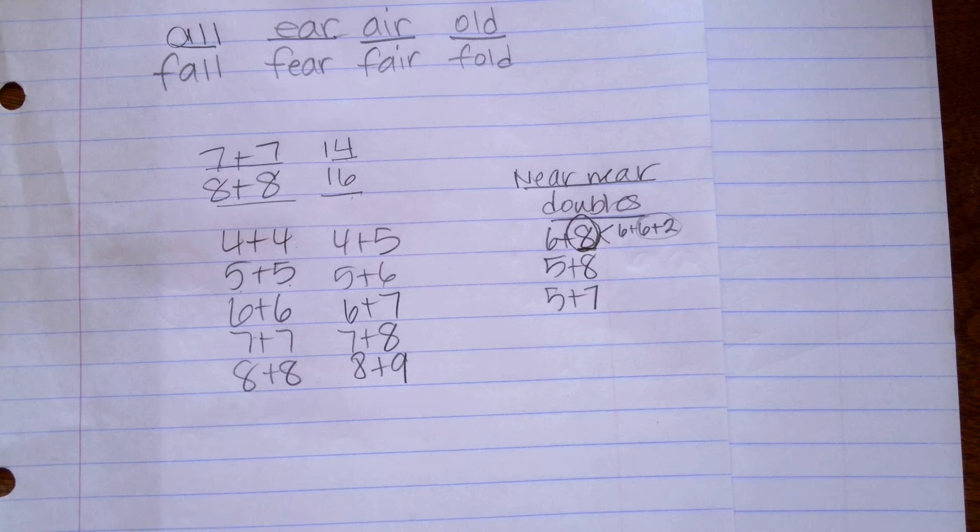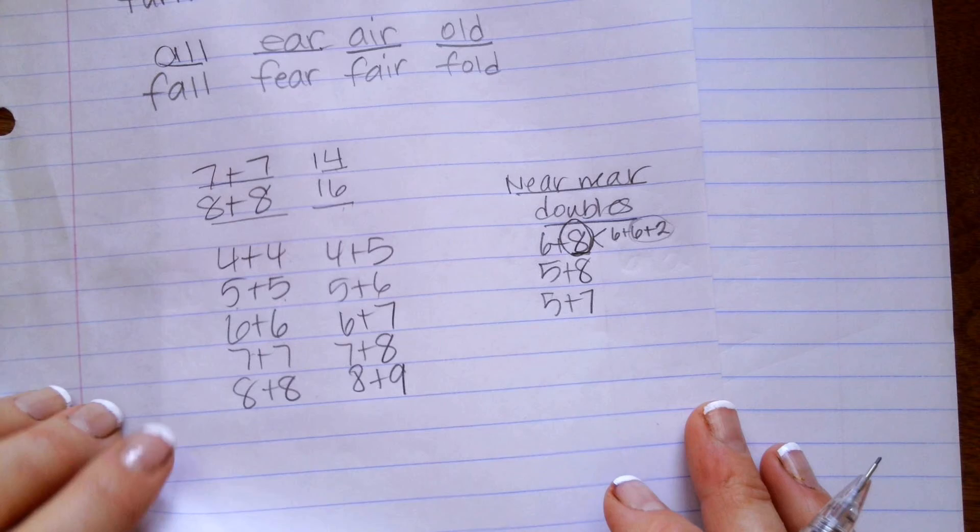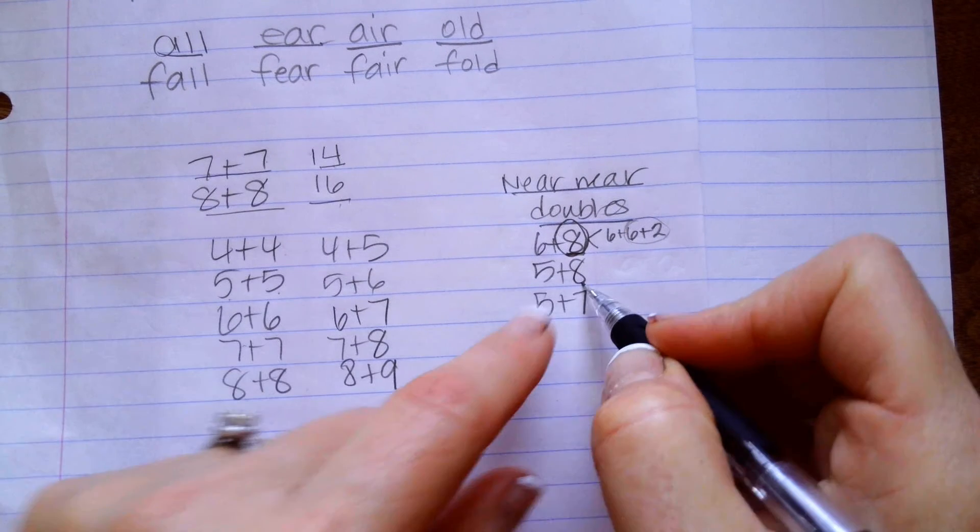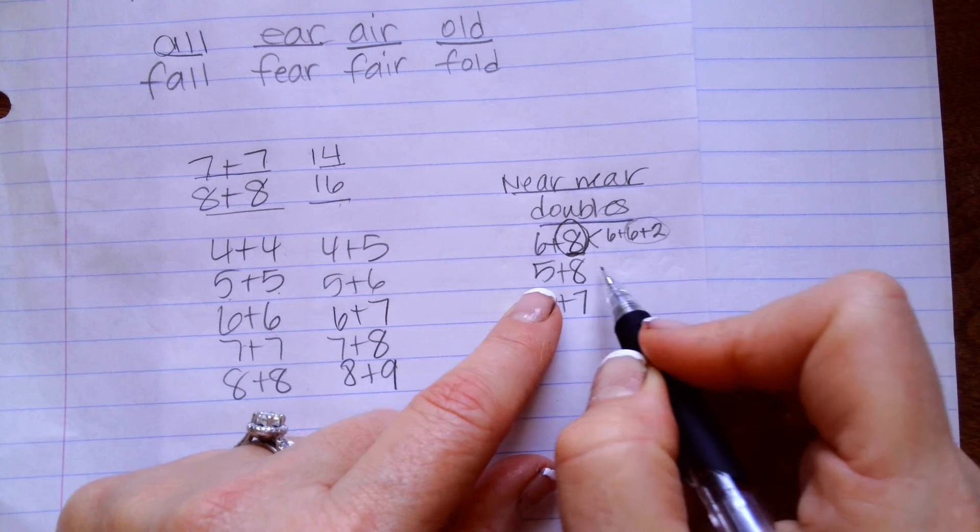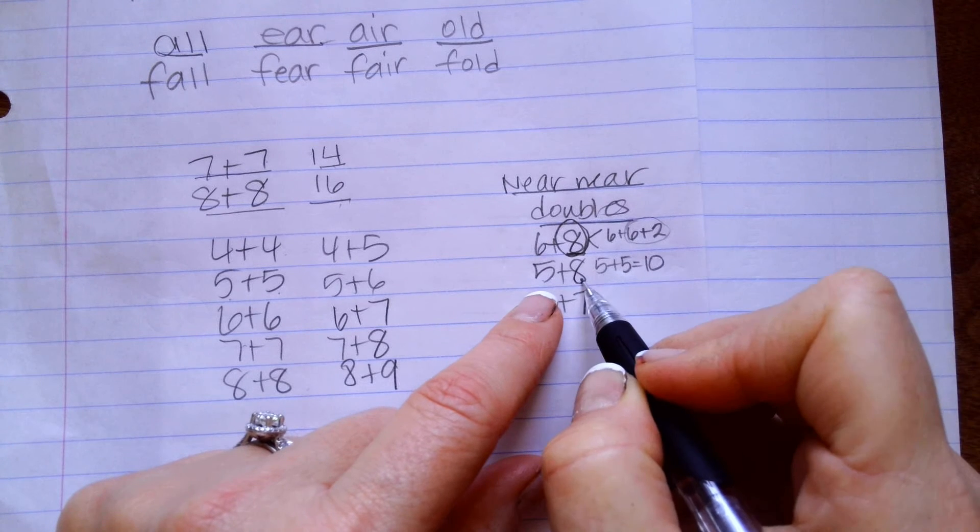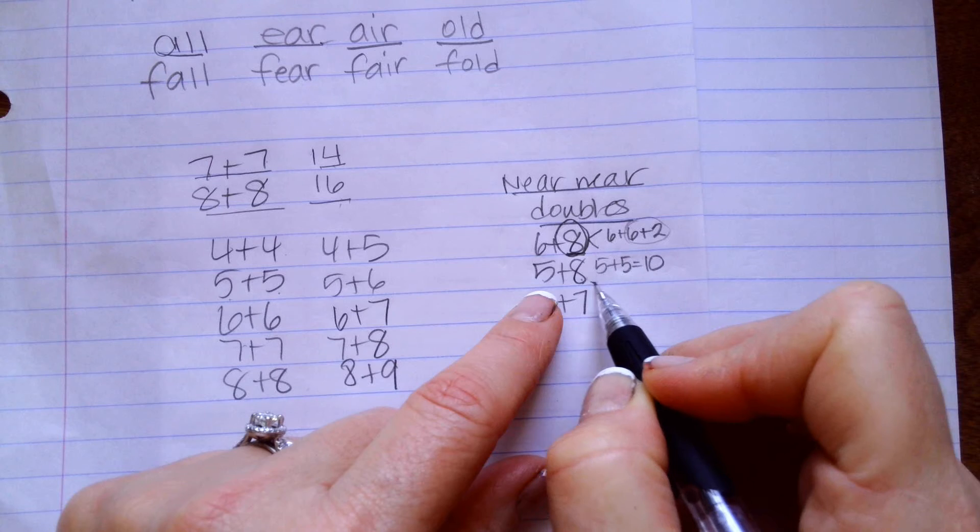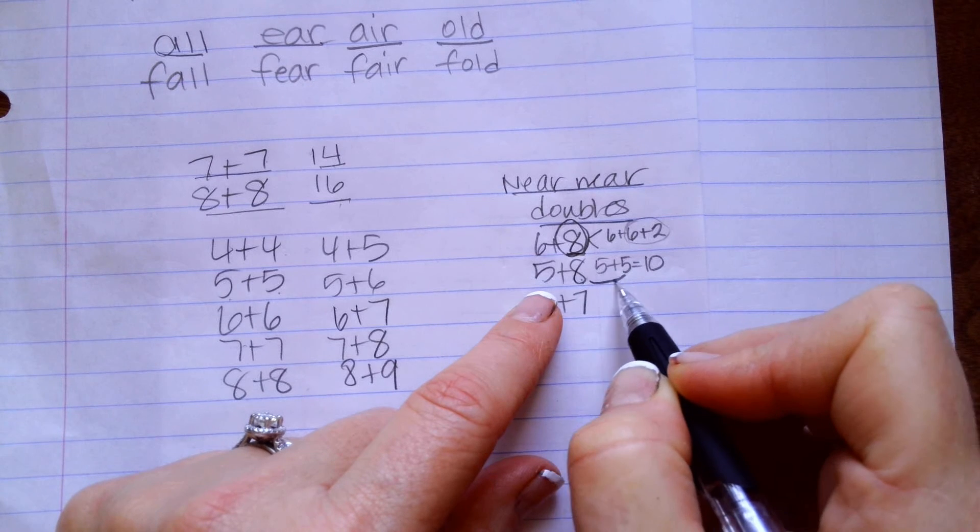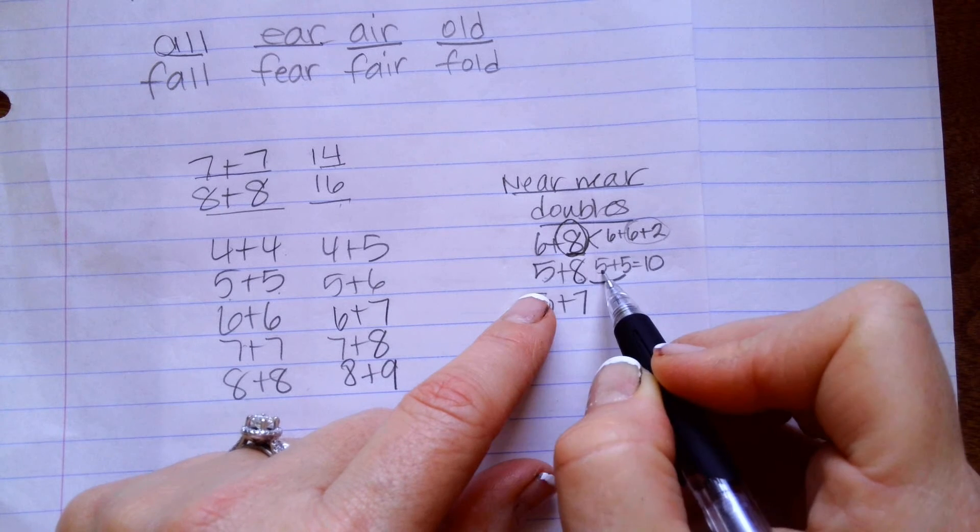The other thing you can do is just memorize that it's 14, but I prefer that we break numbers into pieces. And what I mean by that is, for this one, I know that I know 5 plus 5 is so easy for me. 5 plus 5 is 10,